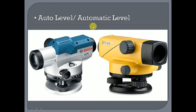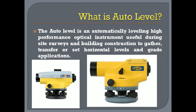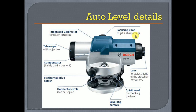Nowadays, the auto level is the standard. Today we are going to look in detail at how the auto level works and what its components are. The auto level is an automatically leveling, high-performance optical instrument useful during site surveys and building construction — used to transfer horizontal levels and grade applications. It is called auto level because of the compensator present inside it, which compensates up to 15 minutes of tilting error and balances the instrument.